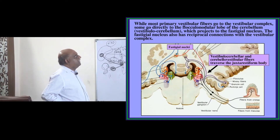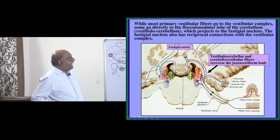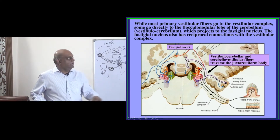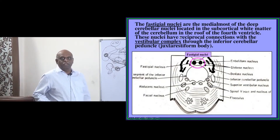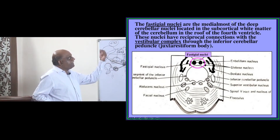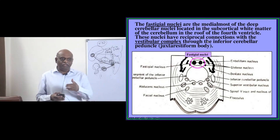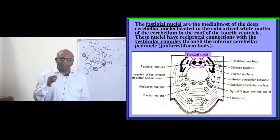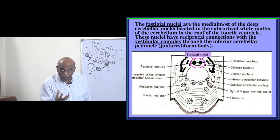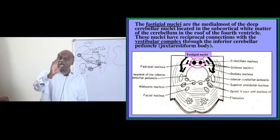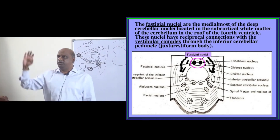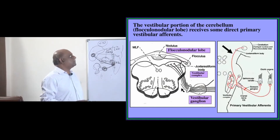There are fastigial nuclei, and the vestibulo-cerebellar and cerebello-vestibular fibers all pass through a bundle called the juxta-restiform body. Among the various deep nuclei of the cerebellum, the fastigial nuclei are the most medial. Fastigial nucleus and flocculo-nodular lobe are the two structures in the cerebellum directly connected with the vestibular nucleus in the medulla — this is what you must ultimately remember.